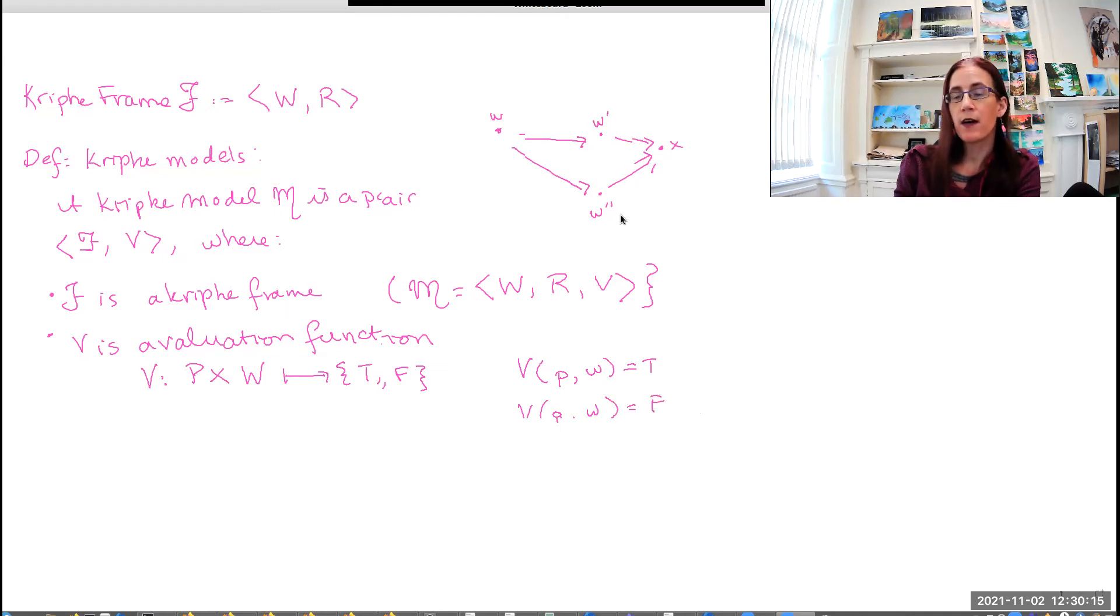So we only define this at the atomic level, but there is a nice way that we can then augment our dot and arrow diagrams for the Kripke frames into Kripke models just by annotating each world. So here, P is true and Q is false. And then we could also fill out the information about all of the other worlds, but this is basically what it will look like.